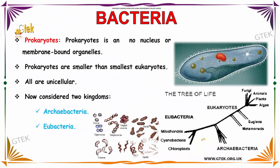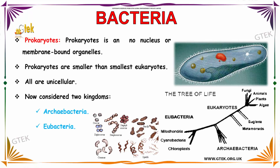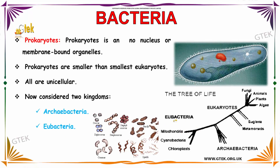In bacteria, prokaryotes have no nucleus or membrane-bound organelles. Prokaryotes are smaller than the smallest eukaryotes. In bacteria, the prokaryotes are all unicellular. They are now considered in two kingdoms: the one is Archaebacteria and the other one is Eubacteria.